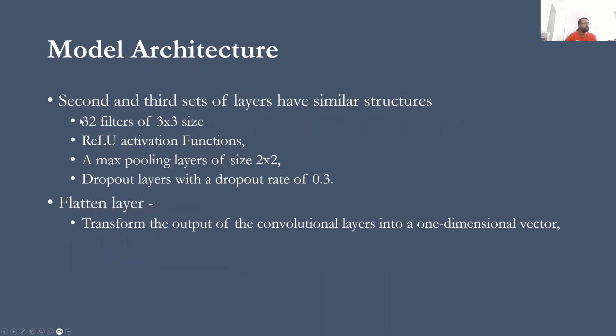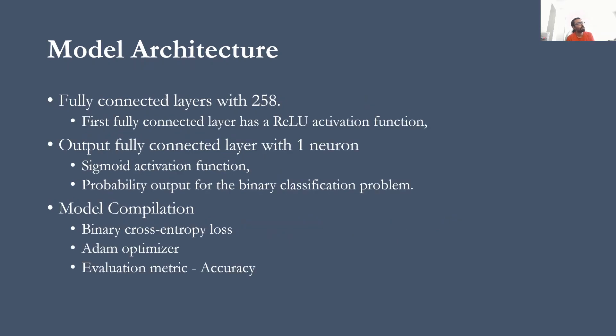And on the second one and third one, I'm just using 32 filters with 3x3 size and using the same activation function, max pooling layer of 2x2 and dropout layer. And following these three sets of layers, I put a flattening layer in the middle so that it transforms the output of these convolution layers into a one-dimensional vector basically, so that I can put a dense layer after that, and that is actually what I have. I have a fully connected dense layer with 258 neurons with ReLU activation function. And following that is my final output layer which gives me the probability of the classification problem with sigmoidal activation function.